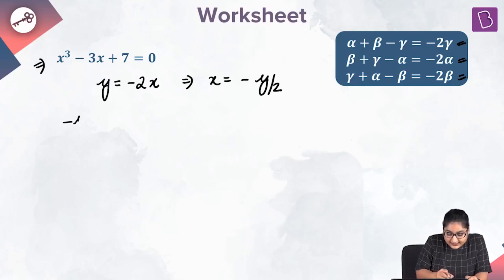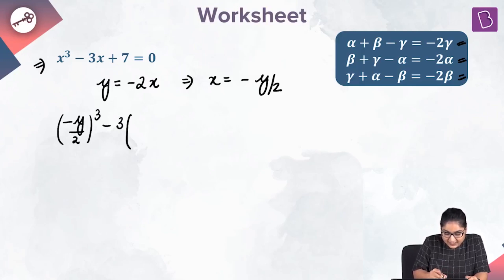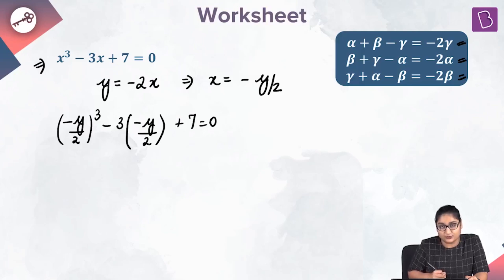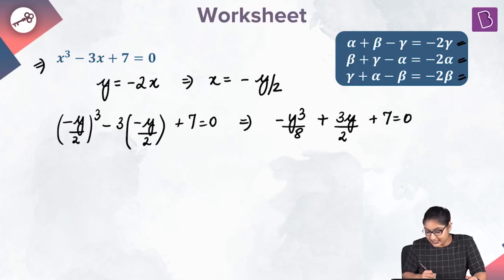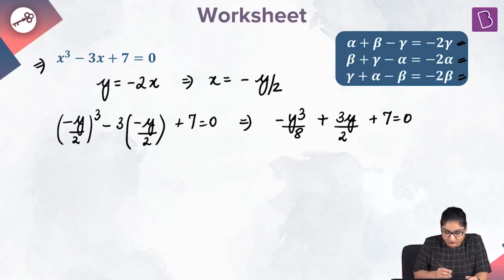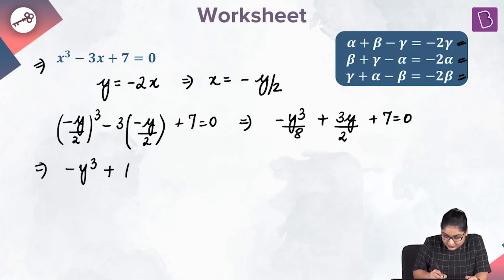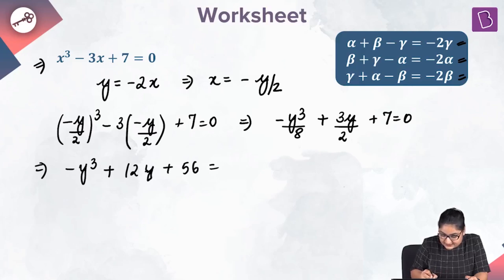What we'll get is negative y by 2 whole cube minus 3 multiplied by negative y by 2 plus 7 equal to 0. If I simplify it further, I'll get negative y cube divided by 8 plus 3y divided by 2 plus 7 equal to 0. Taking LCM as 8, we get minus y cube plus 12y plus 56 equal to 0.